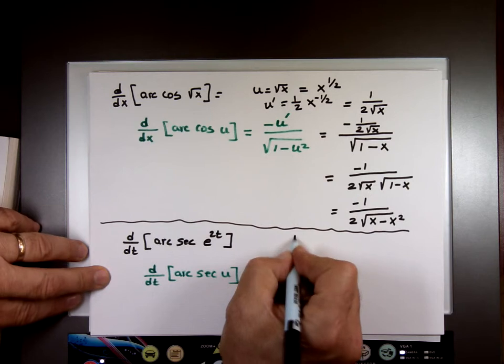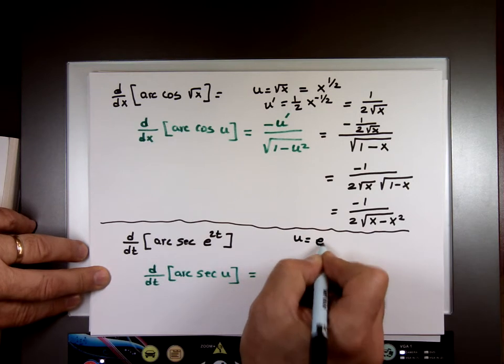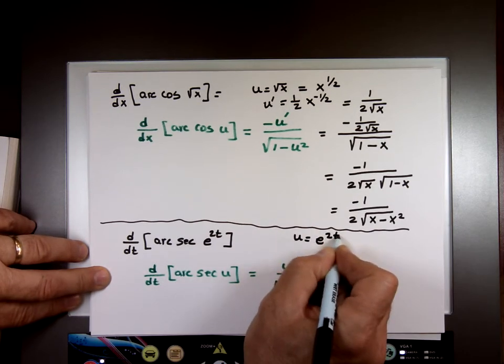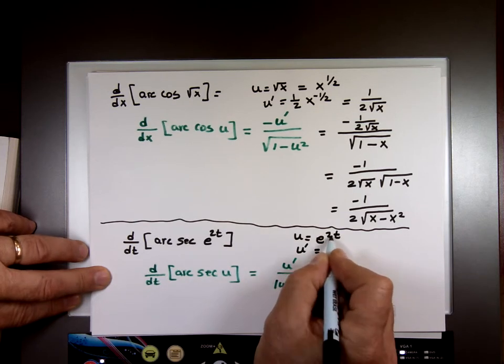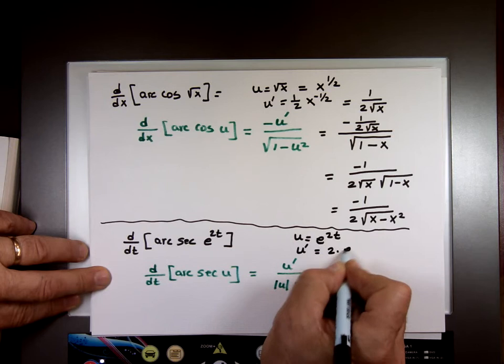Well, u here is going to be e to the 2t. u prime is going to be the derivative of that, which is 2 times e to the 2t.